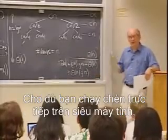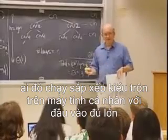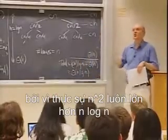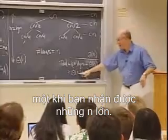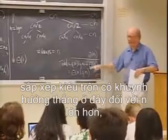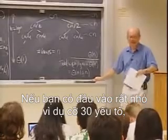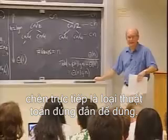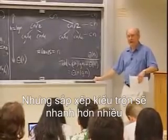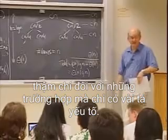Even if you ran insertion sort on a supercomputer, somebody running merge sort on a PC would have a faster algorithm for sufficiently large input. Because n squared is way bigger than n log n once the n's get large. In practice, merge sort tends to win for n bigger than about 30 or so. If you have a very small input like 30 elements, insertion sort is a perfectly decent sort to use, but merge sort is going to be a lot faster even for only a few dozen elements.